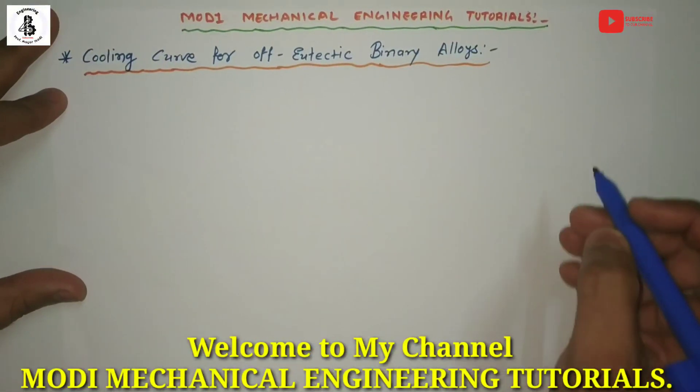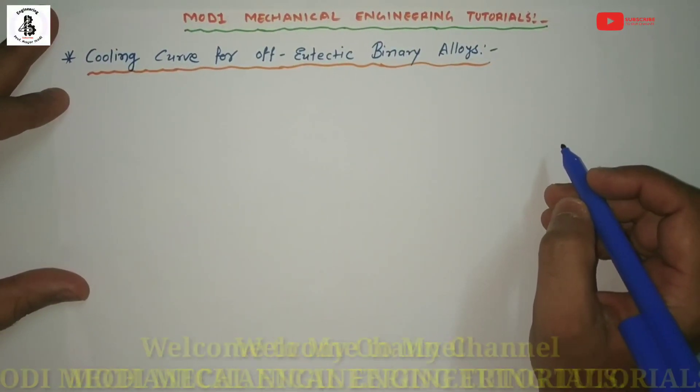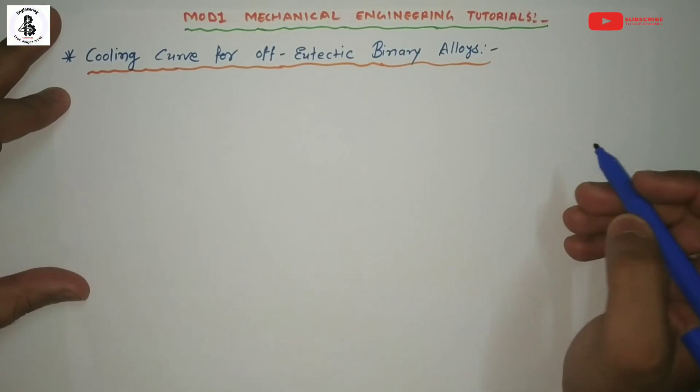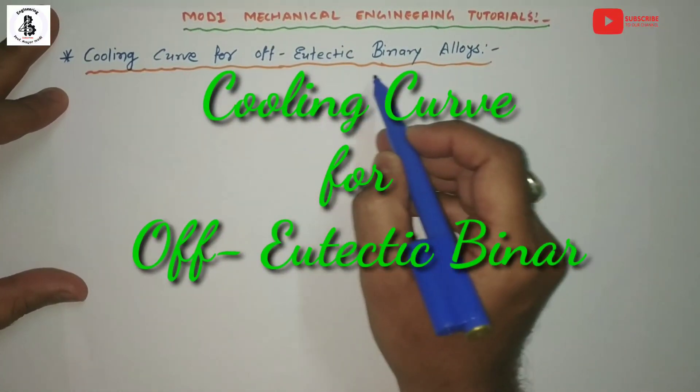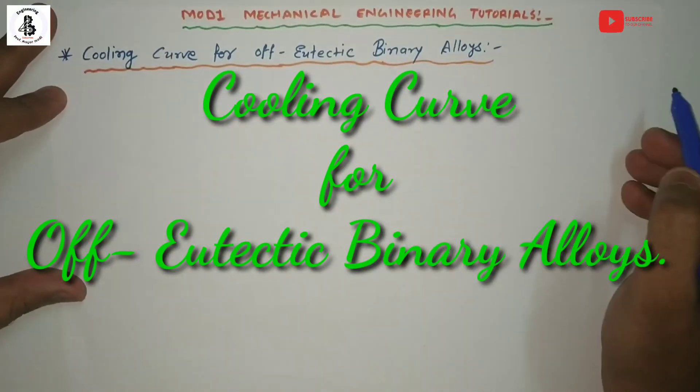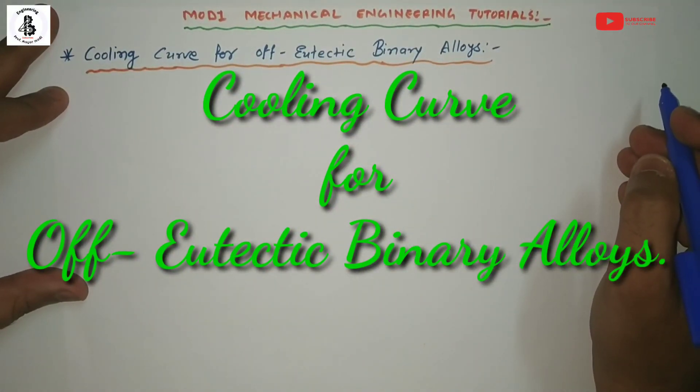Welcome to my YouTube channel Modi Mechanical Engineering Tutorials. In this video I would like to explain about the cooling curve for off-eutectic binary alloys. In my previous lectures I covered the cooling curve for eutectic binary alloys and before that the cooling curve for binary alloys. Now we will look at the changes specific to off-eutectic binary alloys.